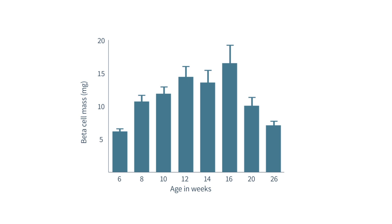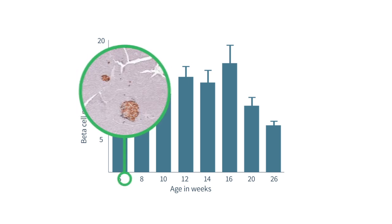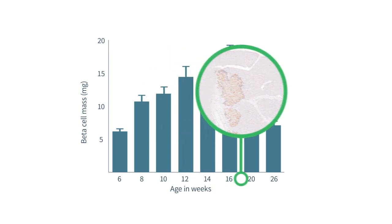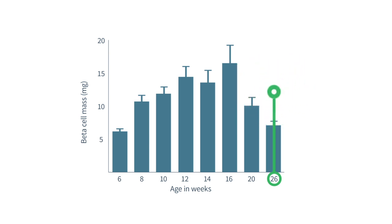Histologically, the beta cells in the ZDF rat initially look healthy. Beta cell mass then expands before apoptosis leads to deterioration of normal islet structure and loss of beta cell mass.